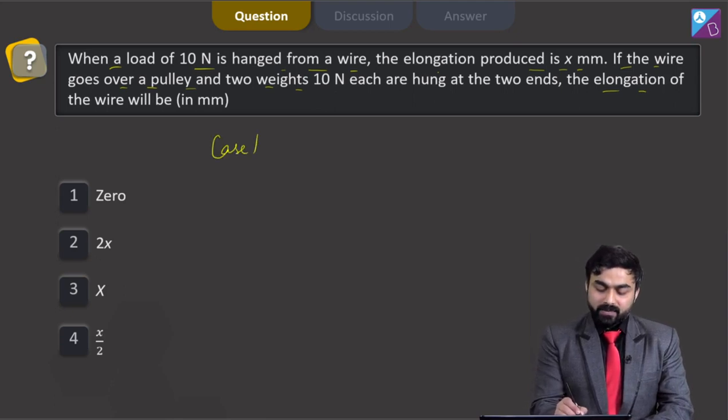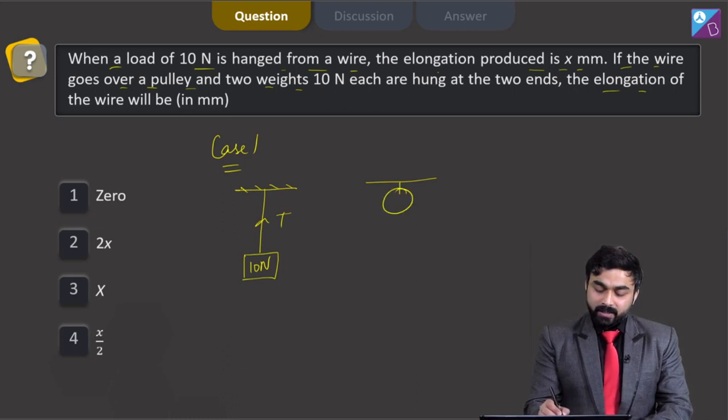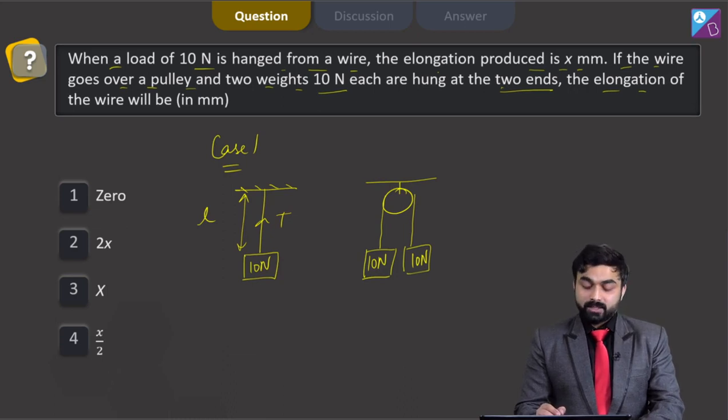So the first case here is that a 10 Newton load is hanged on the wire. And the second case is that this particular wire which was of L length, the same wire of L length, is passed over a pulley and the two ends of the wire are hung by 10 Newton weights.